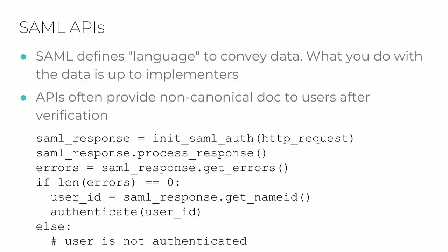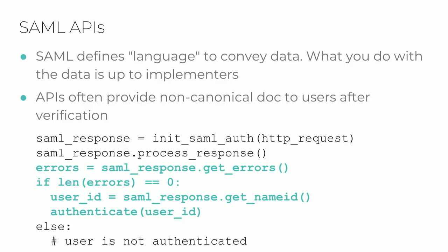SAML is really just a language that conveys data; it's still up to the SP implementer to decide what to do with that data. In this code snippet, the HTTP request object is processed and transformed into a SAML document object, which is then checked for signature validity. Assuming no errors, we extract the relevant data — in our case, the name ID element from the SAML XML. A subtle point is that underneath the hood, libraries do not often use canonical XML for this post-processing step, meaning the document used for signature verification may differ slightly from the one used for data extraction.